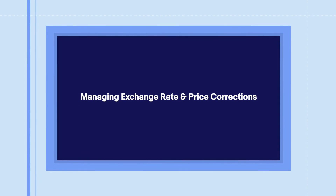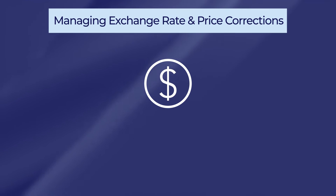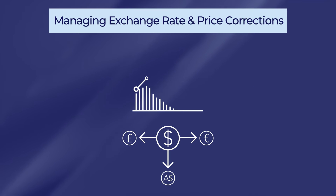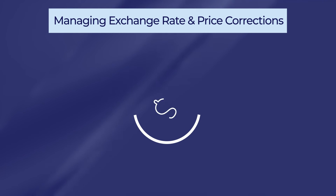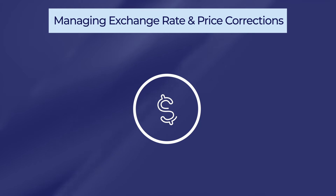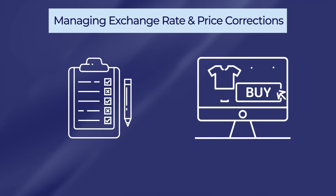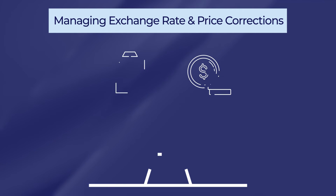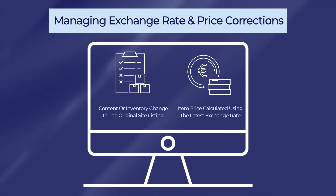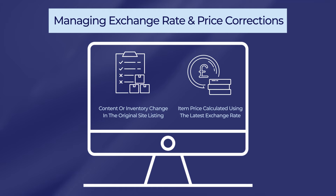Number 3: Managing exchange rate and price corrections. As a seller, when you post a listing via eBay Mag, the exchange rates for international sites are fetched from the market exchange rate. Once the listing is published, the item's price on international sites remains unchanged — it is not recalculated even if there is a change in the market exchange rate, unless you make changes to the original listing or if a buyer purchases the item. Situations where updates may occur: when there is a content or inventory change in the listing on the original site, or an order has been generated, the item's price will be recalculated using the latest exchange rate in the eBay Mag system and then synchronized with the international sites. Or if there is a manual price correction on eBay Mag's sites page, eBay Mag will recalculate the item's price based on the latest exchange rate in the eBay Mag system.